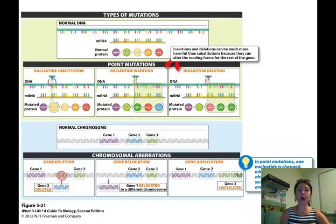So we have our different types of mutations and they have very specific names to them. Let's look at a normal piece of DNA, which is up at the very top. The normal piece of DNA is transcribed into mRNA, which is translated into a normal protein. You can see the three-letter sequences.